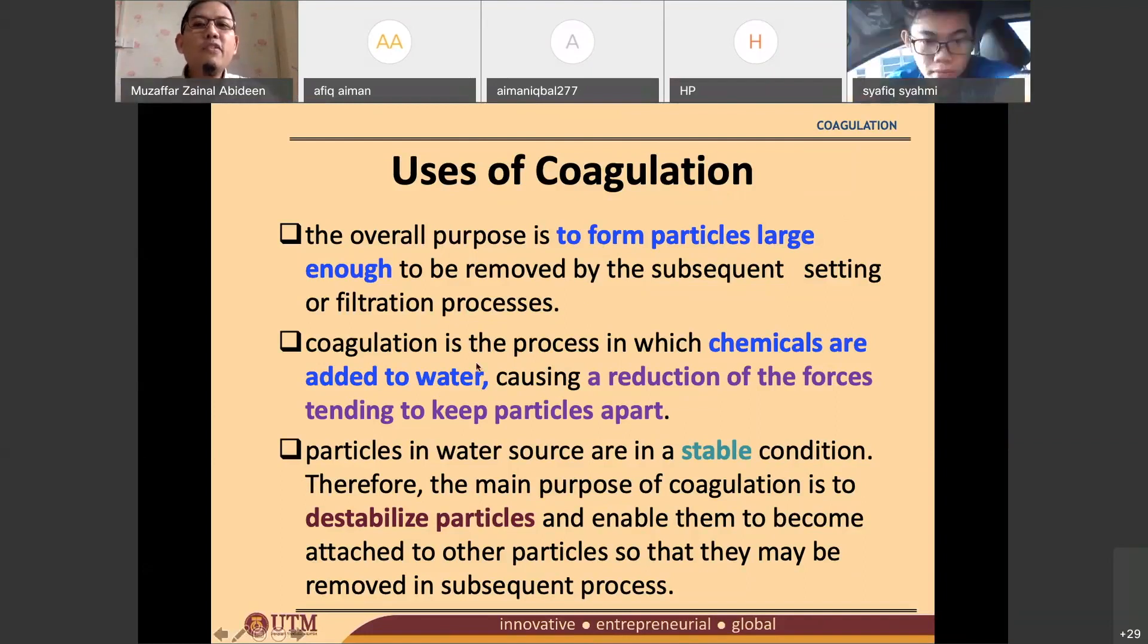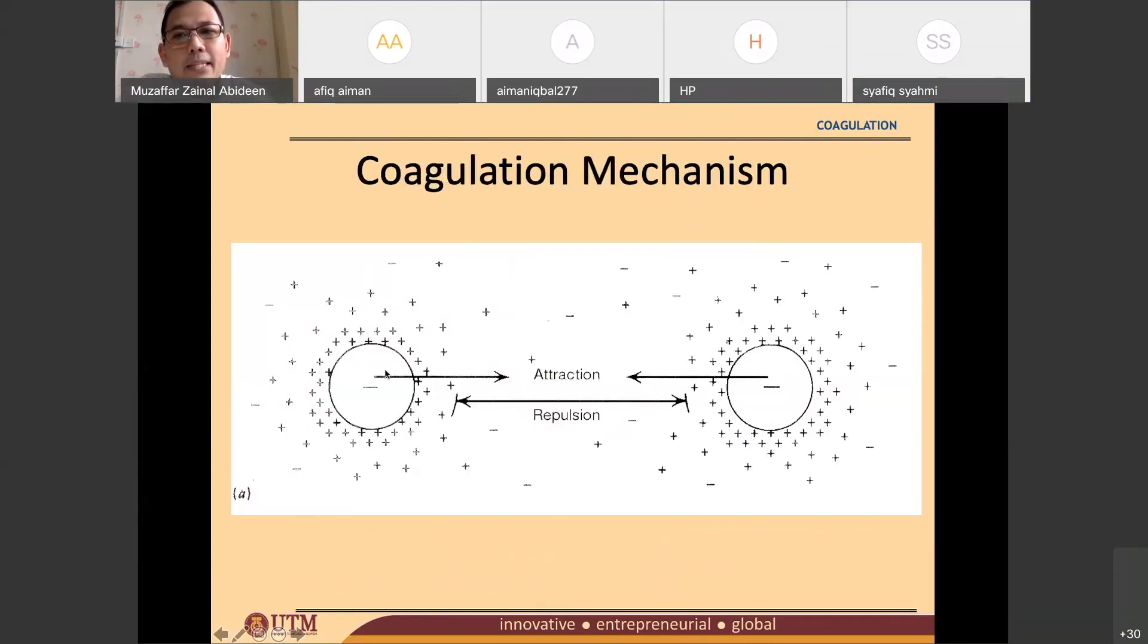So a reduction of the forces tending to keep the particles apart. So these are the particles. We have particle one and also particle two. So they are very far to each other. So whenever you have two particles, negatively charged particles, normally particles in water will be negative. You should not be questioning on that. The particle, the silts, the clay are all in negative charge.